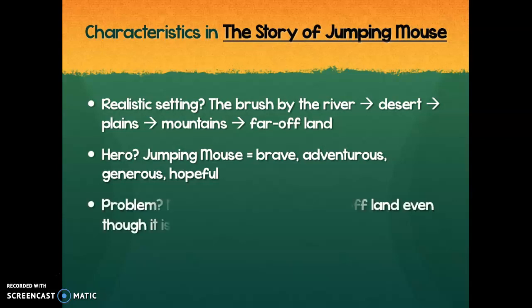What was the problem he had to solve? It wasn't a traditional problem — he had to find a way to the far-off land even though it was really difficult. He encountered many obstacles; the shadows in the sky referred to birds of prey like a hawk or eagle that would probably eat a mouse. That's why the animals provided him protection — he would walk underneath the bison and underneath the wolf so the birds of prey didn't find him as he traveled across the plains and mountains.